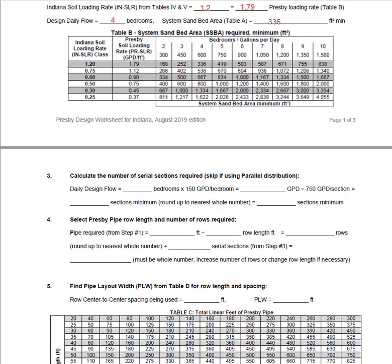We will now move on to step number three, which is only applicable if you are using serial distribution. If you are using parallel distribution you can skip this step. Because we are using serial distribution, we're going to continue. Our daily design flow is calculated using the number of bedrooms — four — and at 150 gallons per day per bedroom, we wind up with 600 gallons per day total. Because the maximum flow for each section is 750 gallons per day, we divide 600 by 750, bringing us to 0.8. Rounding up to the nearest whole number, our minimum number of sections is one. If this had been a six-bedroom system, we would have needed at least two serial sections.